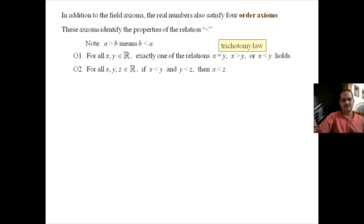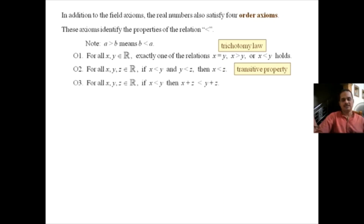The third order axiom states that for all real numbers x, y, z, if x less than y, then x plus z less than y plus z. The fourth order axiom states that for all x, y, z in R, if x less than y and z greater than 0, then x times z less than y times z. A real number greater than 0 is called a positive real number, so this axiom says that multiplying both sides of an inequality by a positive number preserves the inequality.